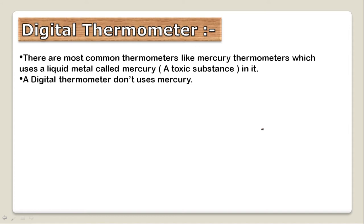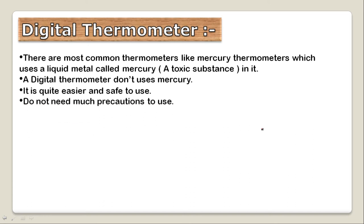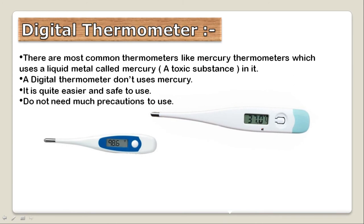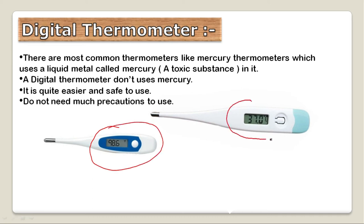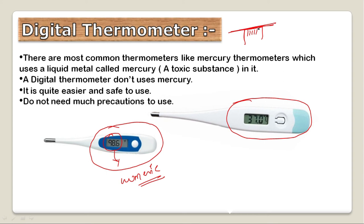Since mercury is toxic, it is not safe to use in all situations. So it is easier and safer to use a digital thermometer, which is easy and simple and does not require many precautions. A digital thermometer is not made of glass, fiber, plastic, or mercury. It provides a numerical reading, which is much easier to read than a mercury thermometer.